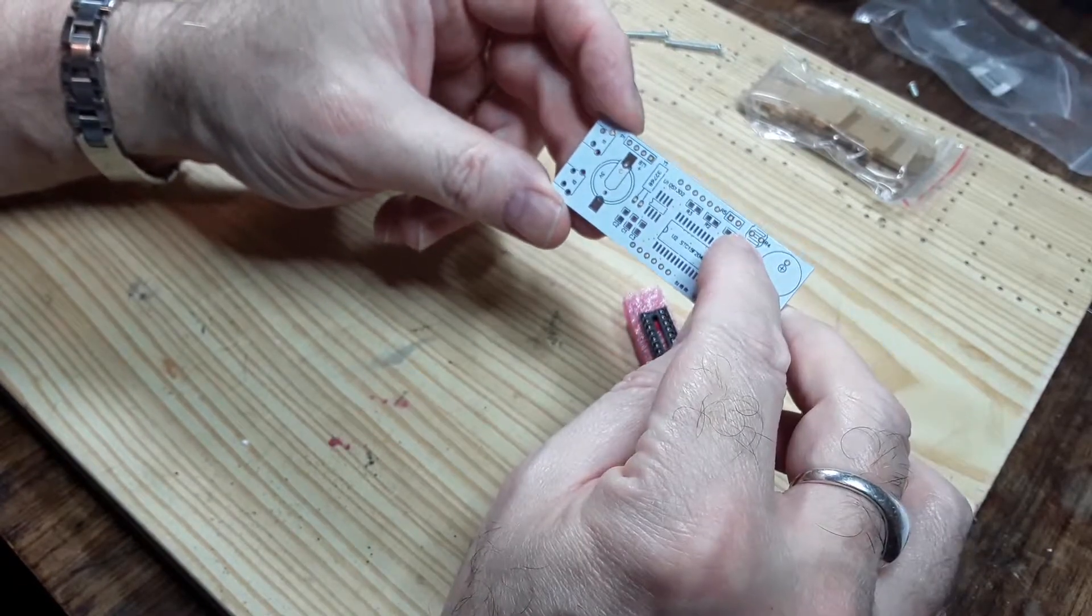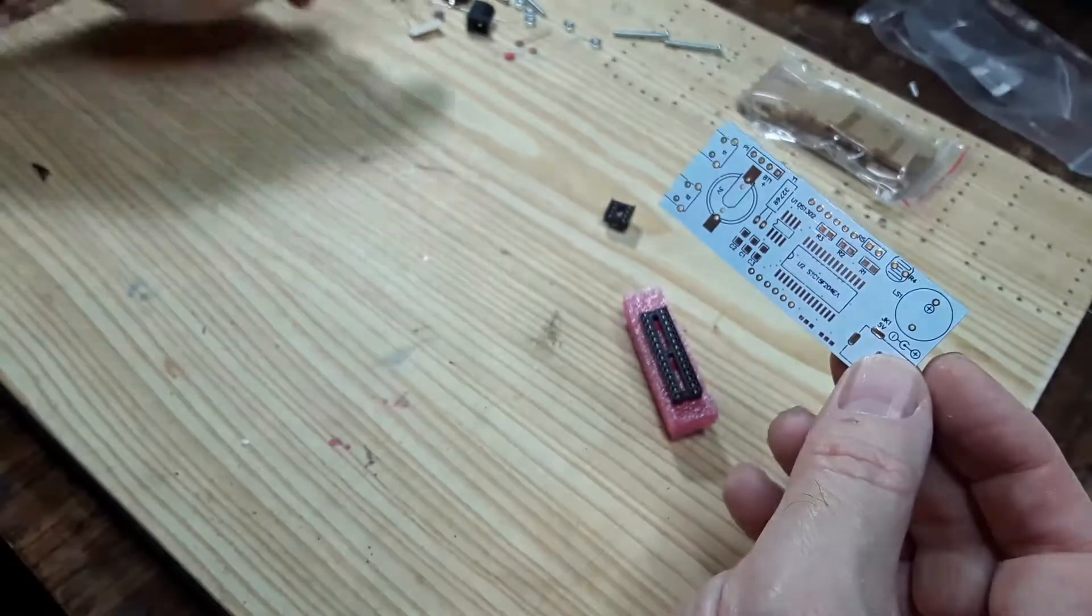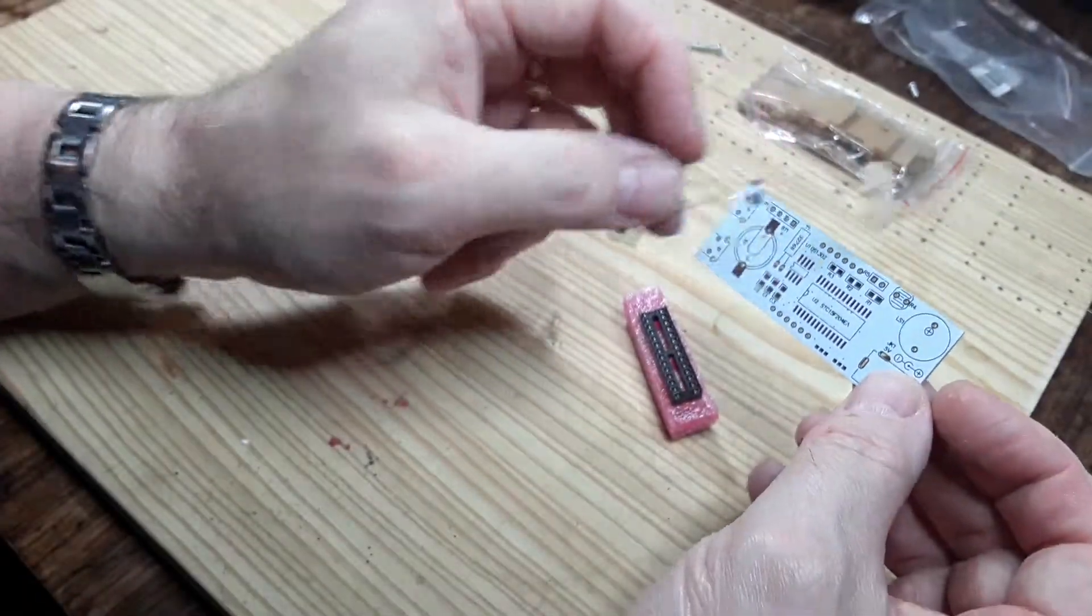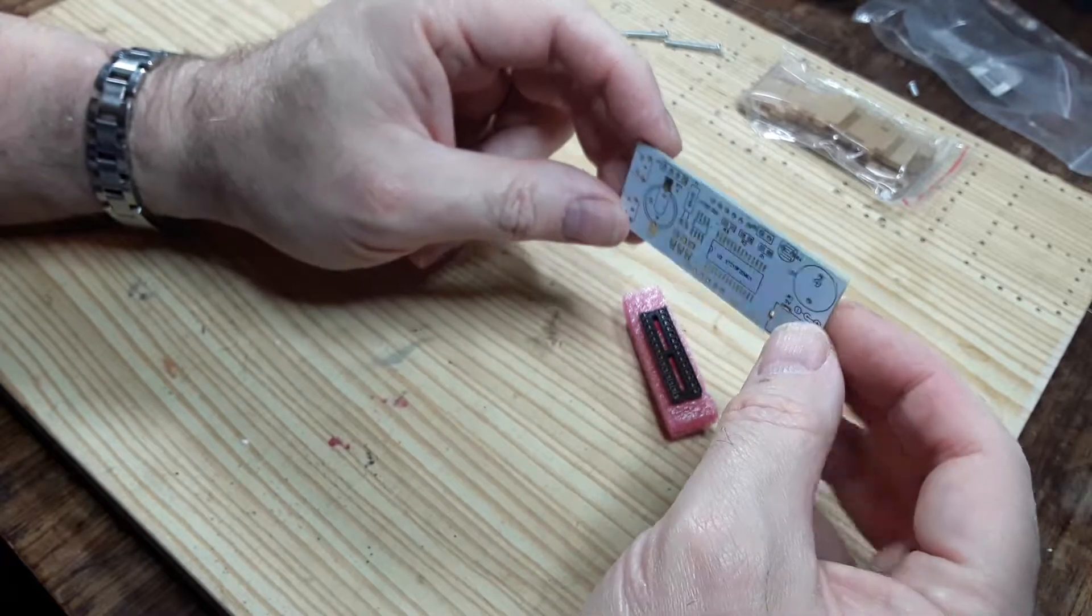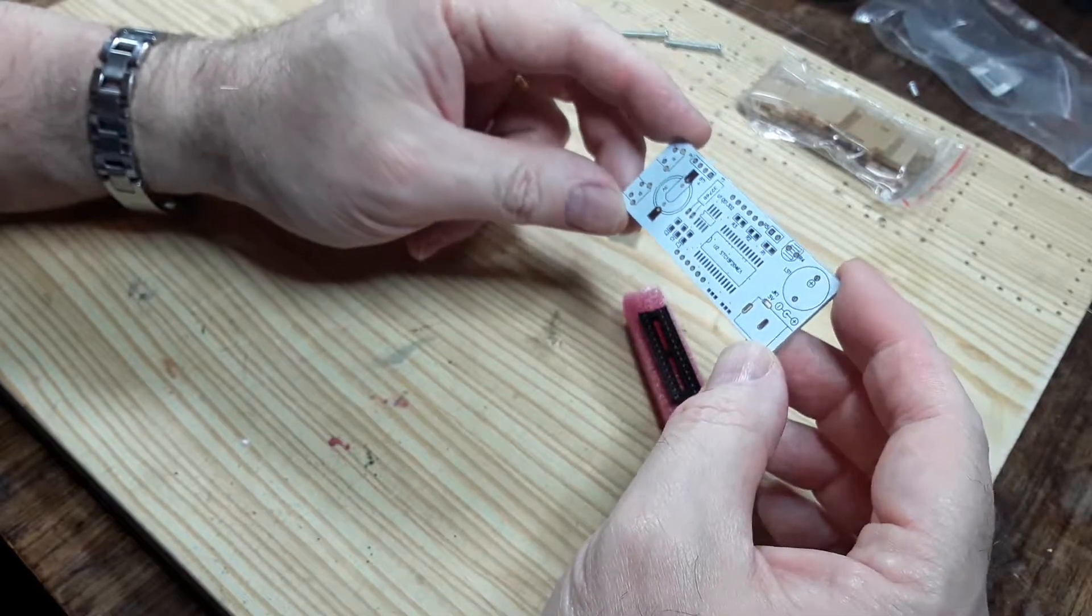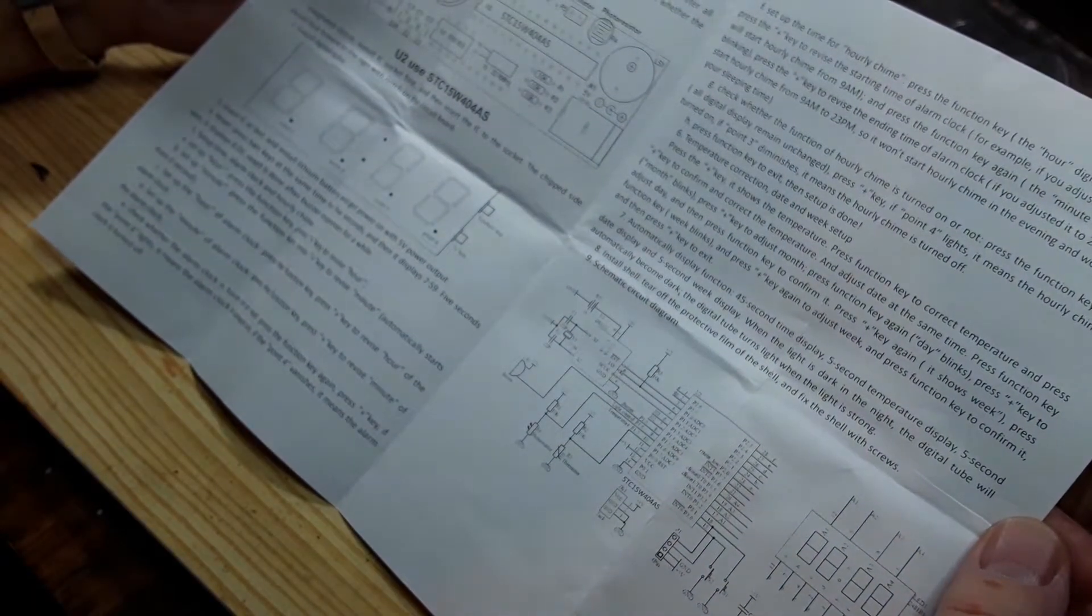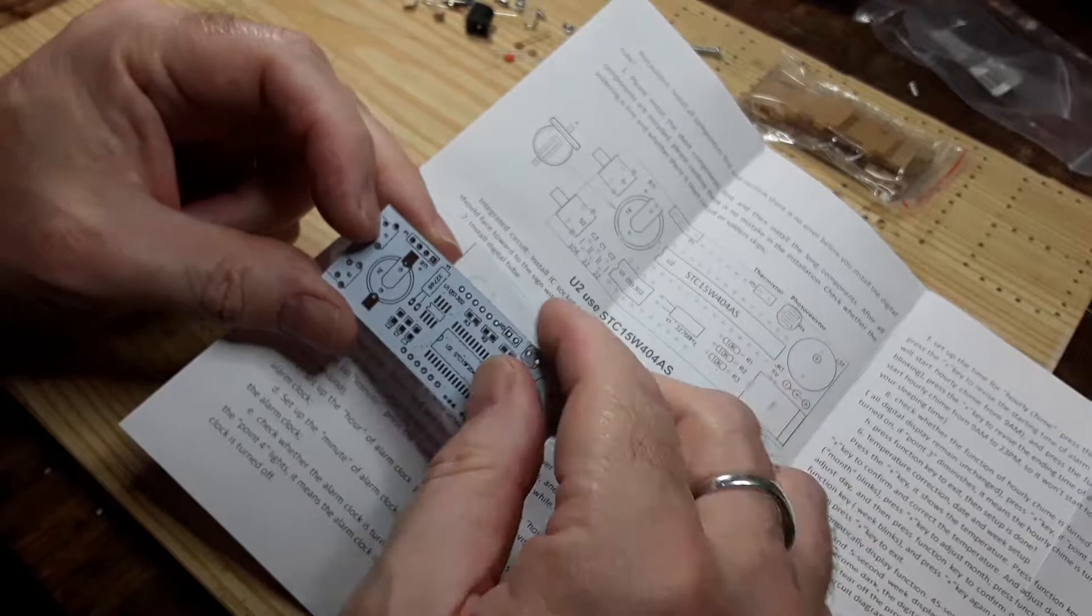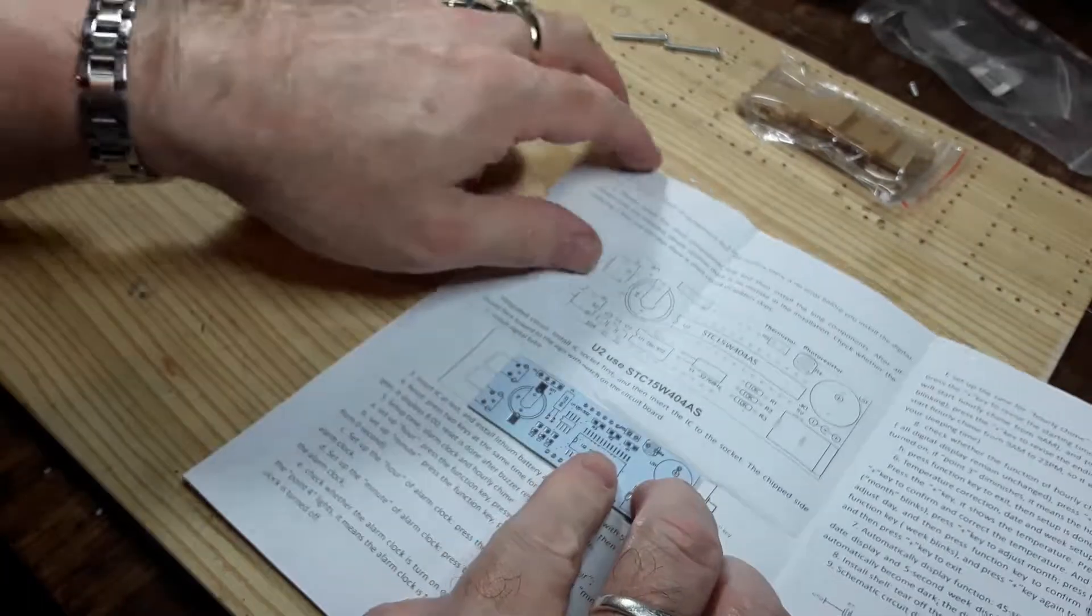Everything else is pretty much the same. There's the photoelectric cell. There's actually one, two, three, four resistors there and they've only provided with three. Well, how annoying is that? Answer: very. I think three capacitors. Let's have a look at the circuit diagram.